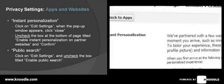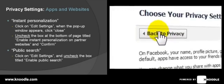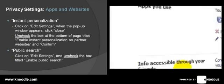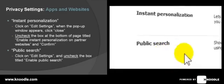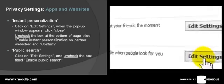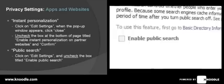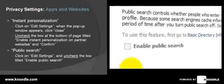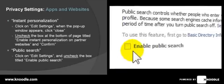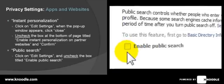Then go back to 'Apps' and find 'Public Search' on this page. Click on 'Edit Settings' — this section determines whether people can find you through Google and other search engines even if they're not on Facebook. We recommend leaving this unchecked. If there is a tick in the box, just click it to uncheck it.